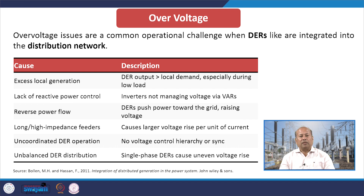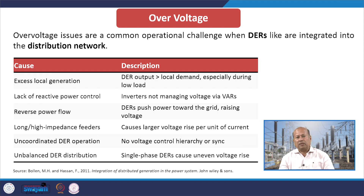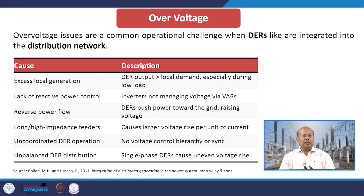Unbalanced DER distribution — where single phase DERs cause uneven voltage rise — is another cause. So the main problems due to over voltage are: excess local generation, lack of reactive power control, reverse power flow, long impedance feeders, uncoordinated DER operations and unbalanced DER distributions.